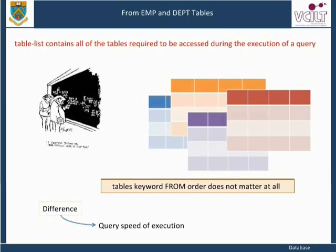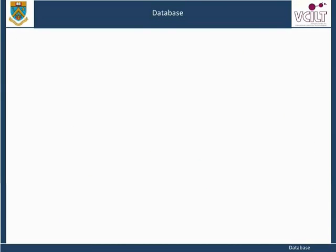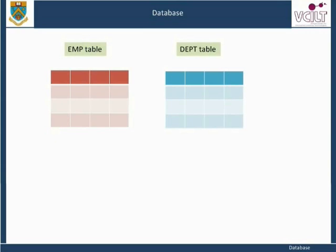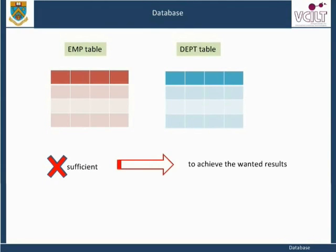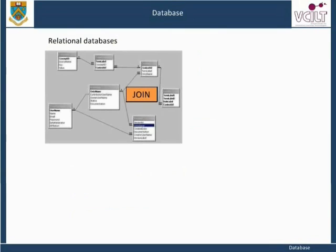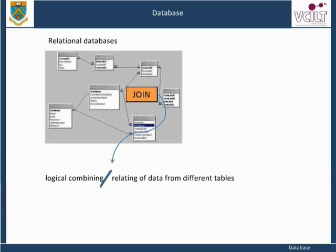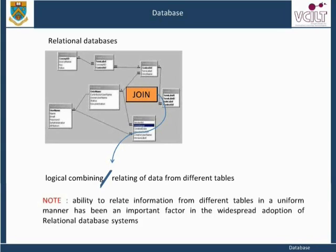This will be discussed further in the unit on advanced SQL. Listing both the employee and the department tables after the FROM keyword, however, is not sufficient to achieve the results we are seeking. We don't merely wish for the tables to be accessed in the query; we want the way in which they are accessed to be coordinated in a particular way. The way this is achieved in SQL is by the relational operator join. The join is an absolutely central concept in relational databases and therefore in the SQL language, because this logical combining or relating of data from different tables is such a common and important requirement in almost all applications. The ability to relate information from different tables in a uniform manner has been an important factor in the widespread adoption of relational database systems.